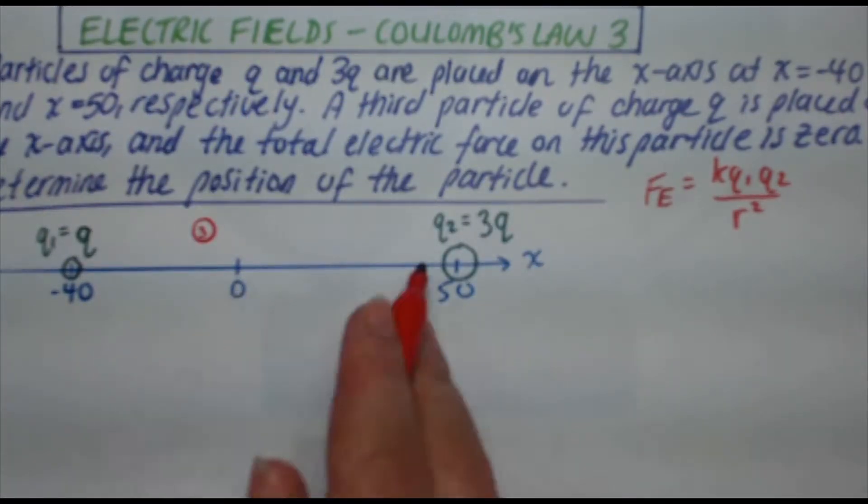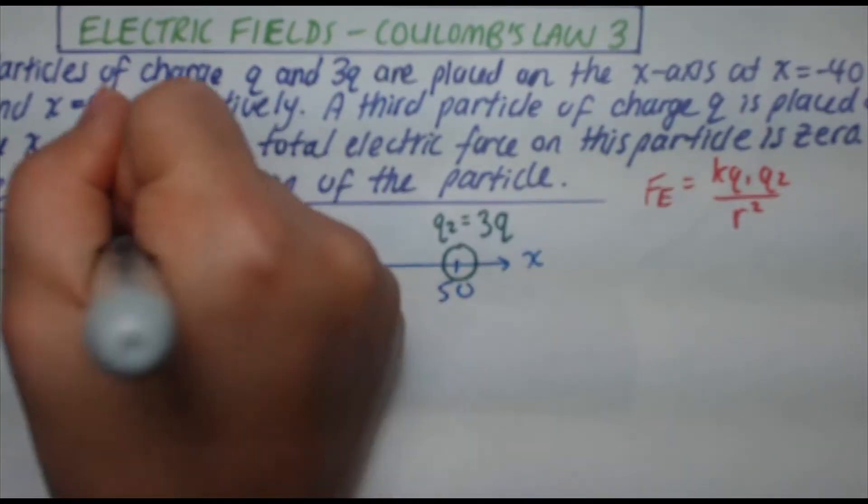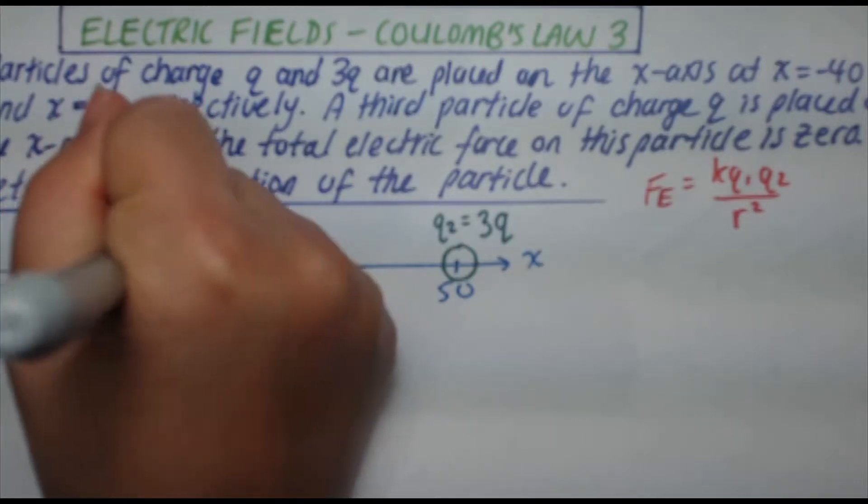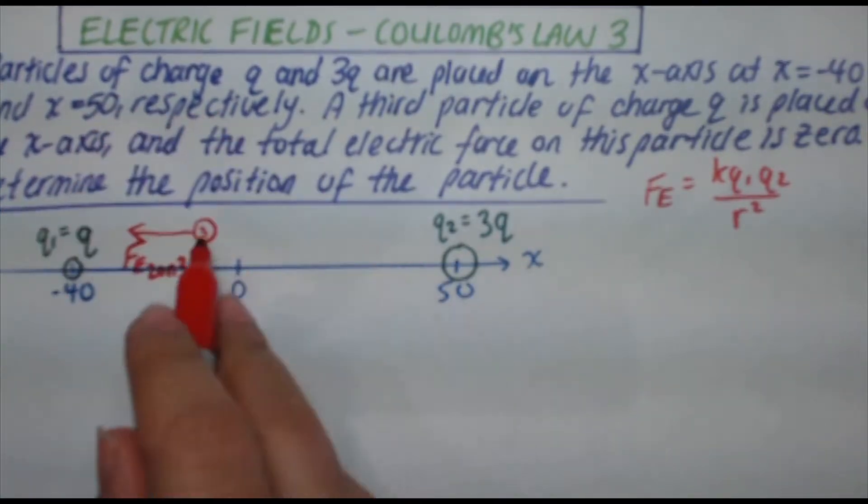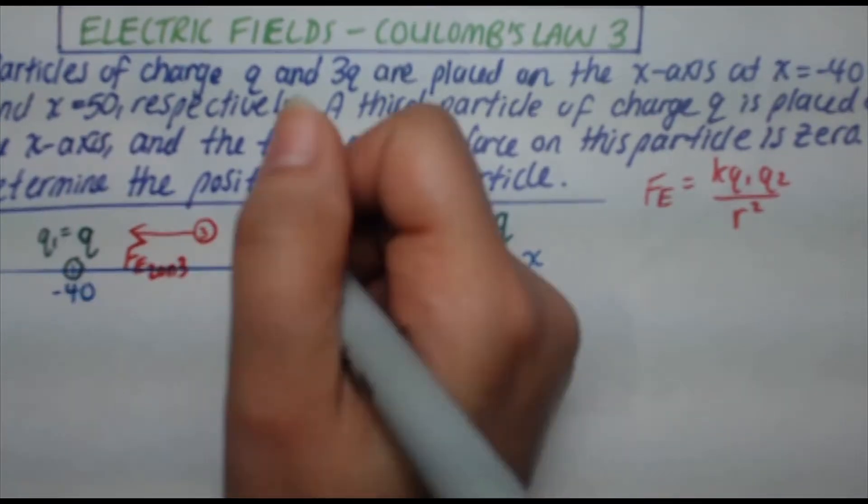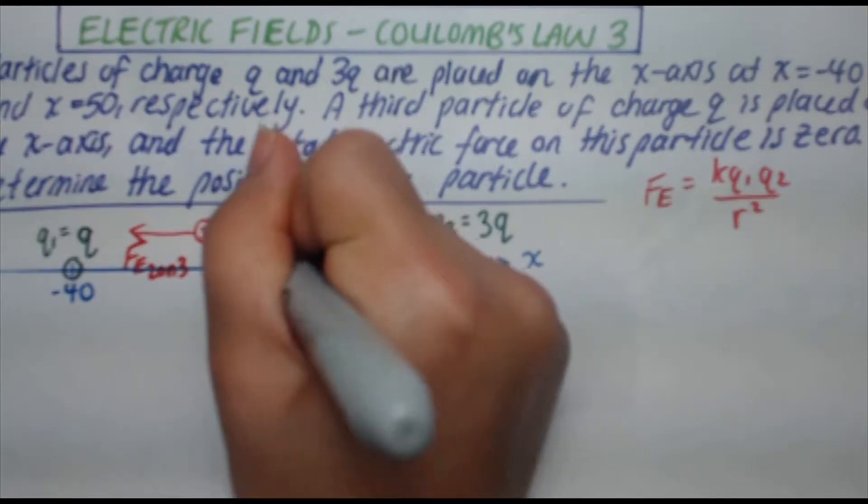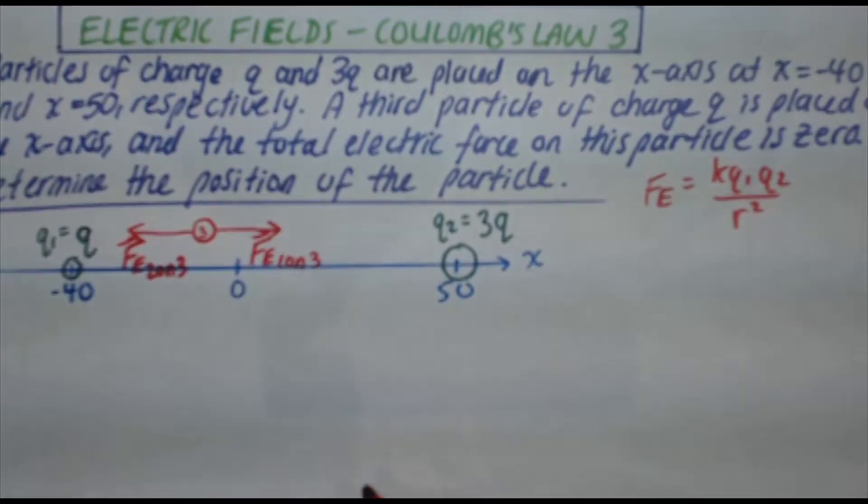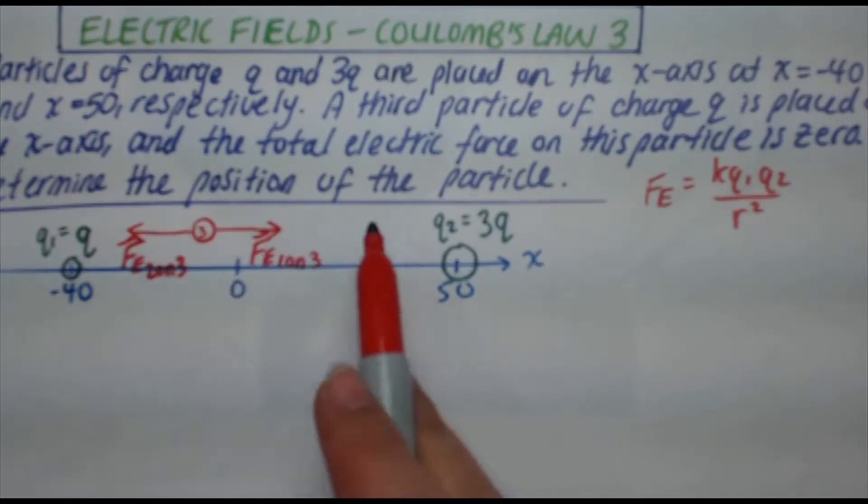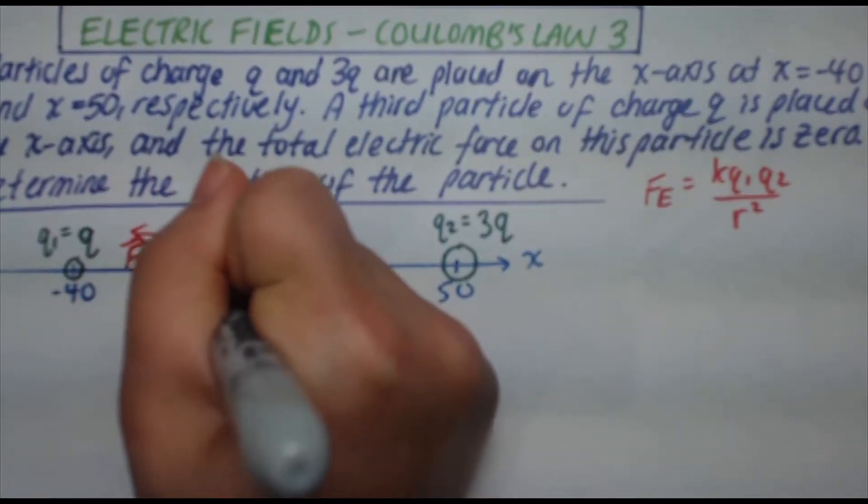So I'm going to call this q3. And I know that the repulsive force from q2, it's going to go this way. So that's going to be Fe 2 on 3. And I have a repulsive force going to the right from q1. I'm going to call that Fe 1 on 3. And I know that those two forces have to balance each other out. Now we're told the third particle has charge q, so I can also say that q3 is equal to q.